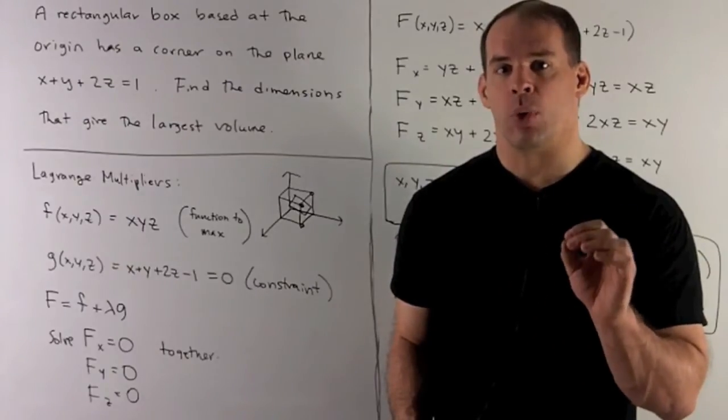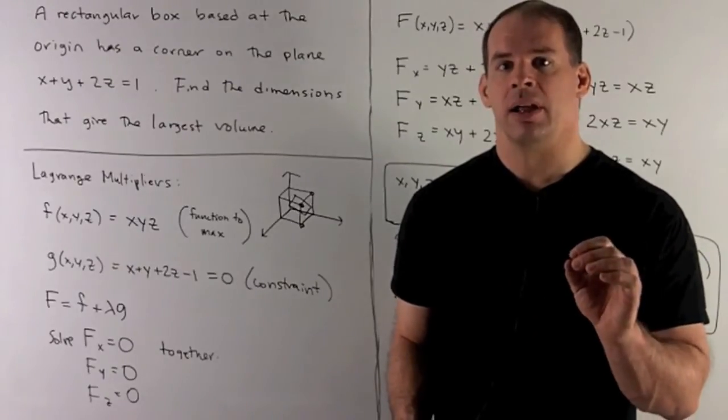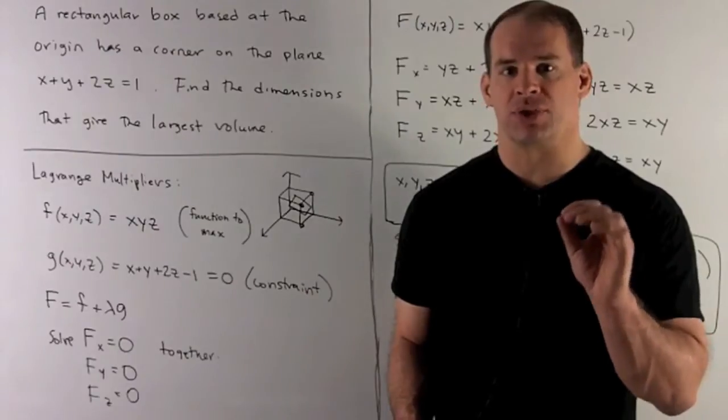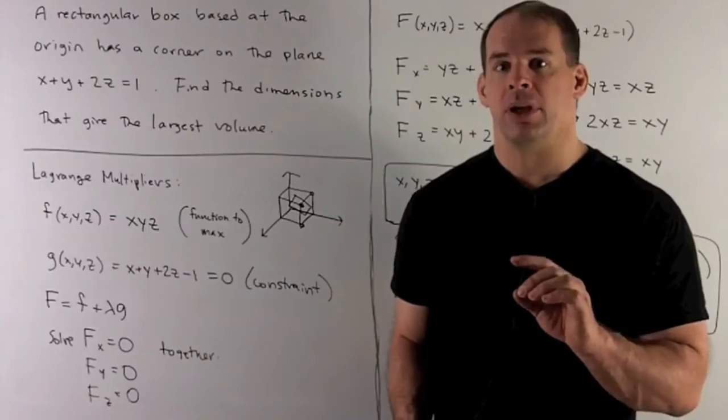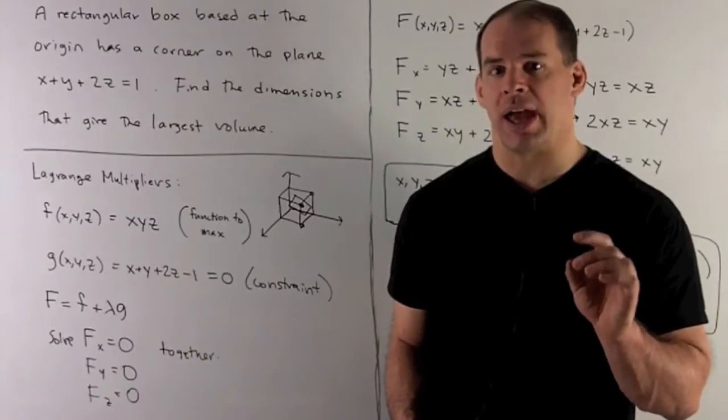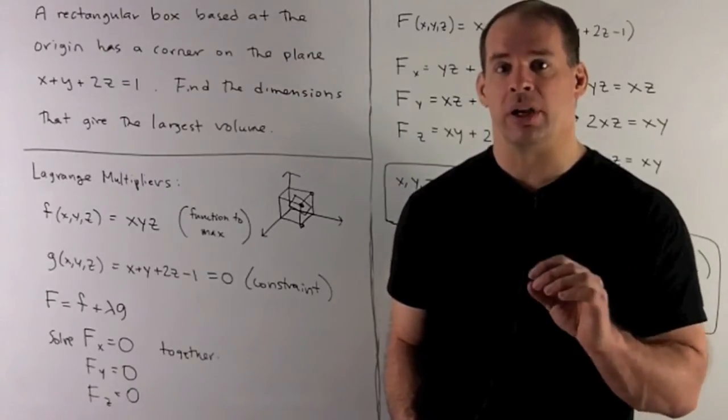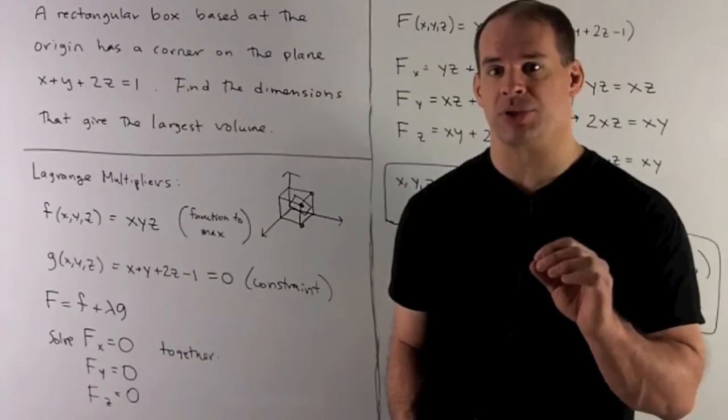Next, I'm looking for a constraint equation. This is going to be some equation which gives us a relation between the x, y, and z that we care about. So in this case, we're going to force x, y, and z to give us a point on the plane x plus y plus 2z equals 1.